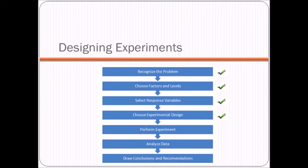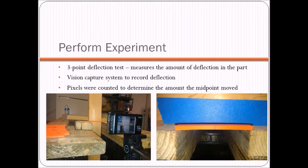Okay, so we've chosen our experimental design. Now the fun stuff begins. Now we actually get to perform the experiment, which we'll talk about now. So how do we perform the experiment? We did a three-point deflection test and that basically measures the amount of deflection in the part. So how much it bends.